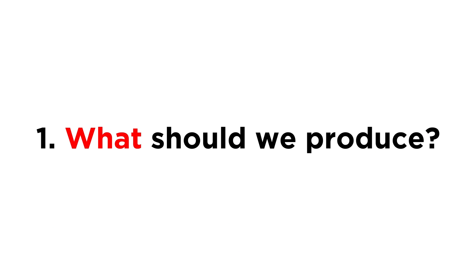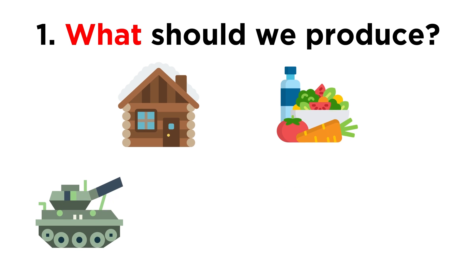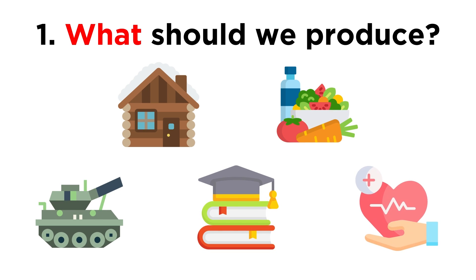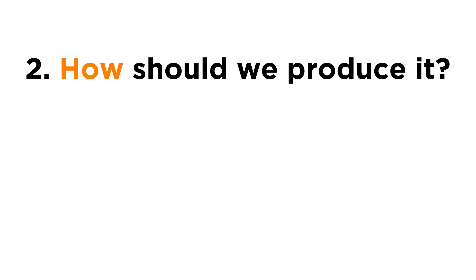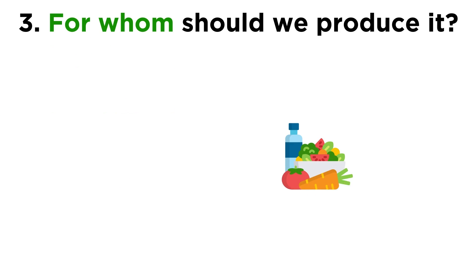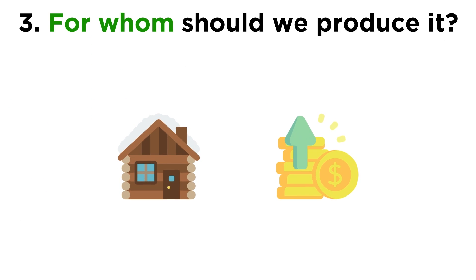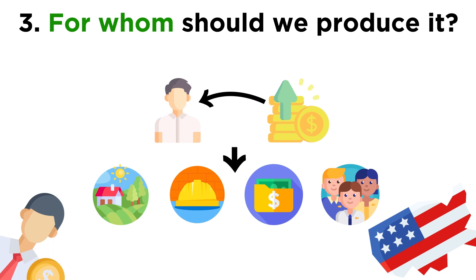To answer the first question, we know that all people need food and shelter, so that has to be produced. However, things get more complicated when we attempt to figure out how many resources we should devote to national defense, education, or healthcare. To answer question two, there are so many ways to produce goods and services, and all require land, labor, and capital, so this requires many trade-offs. For question three, we know that all people get food and shelter, but how much income should people get for supplying the factors of production, and who owns the factors of production?